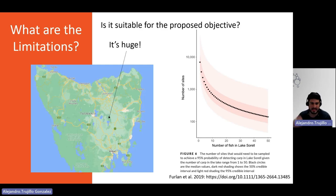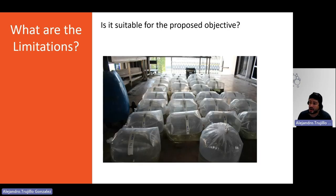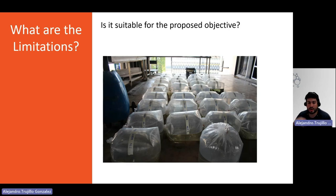So you need to question whether eDNA is the most appropriate method. Are you dealing with a massive lake like Lake Sorrel, or something more contained? A different example is detecting non-permitted fish species coming into Australia from the ornamental trade. In that case, the sampling design is much, much simpler — quite simply because the water is trapped in a small plastic bag. The amount of water is the entire ecosystem. Collecting water samples from this just requires three or four samples. It's not a huge endeavor, so it is important to understand whether eDNA is the most appropriate method for your proposed objective.